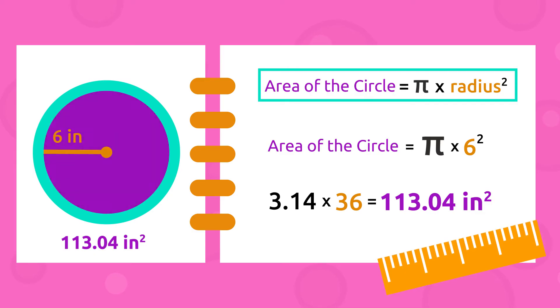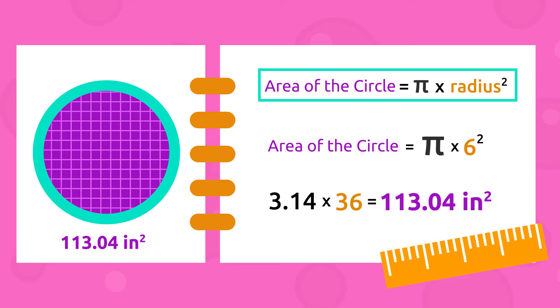That's it! The area of the circle equals 113.04 square inches. This means that 113.04 squares can fit in this circle, each measuring one square inch.